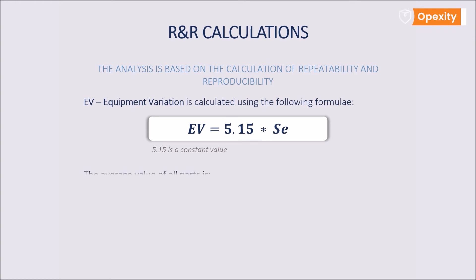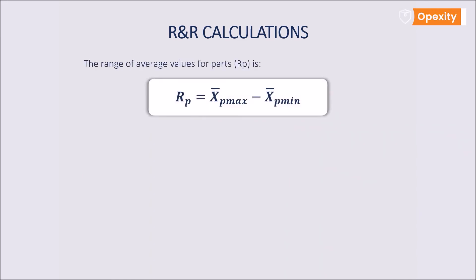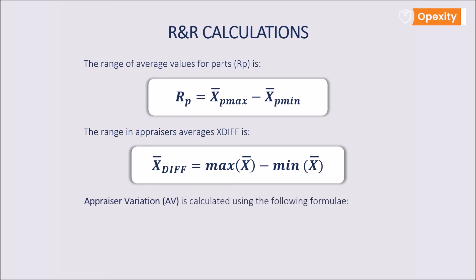In the subsequent step, we calculate the average value X for all the parts tested based on the previously calculated averages for the individual parts. We then calculate the range of the average values for the parts by subtracting the minimal mean value from the maximum mean value. The next step is to calculate xdiff range for the individual appraisers. Now it's time to calculate the appraiser variation AV by substituting the previously calculated parameters into the appropriate formula.